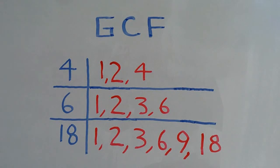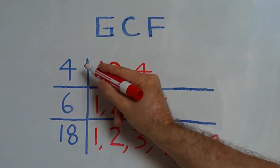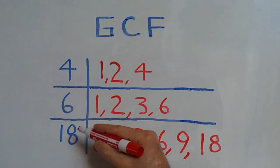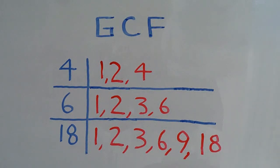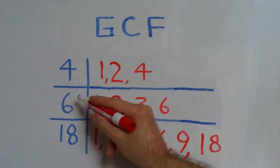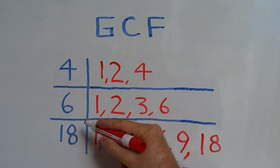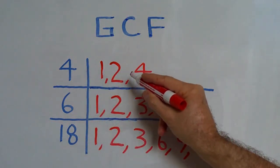We can also find the greatest common factor for three numbers. So if we wanted to find the GCF for 4, 6, and 18, first we list the factors of each number.